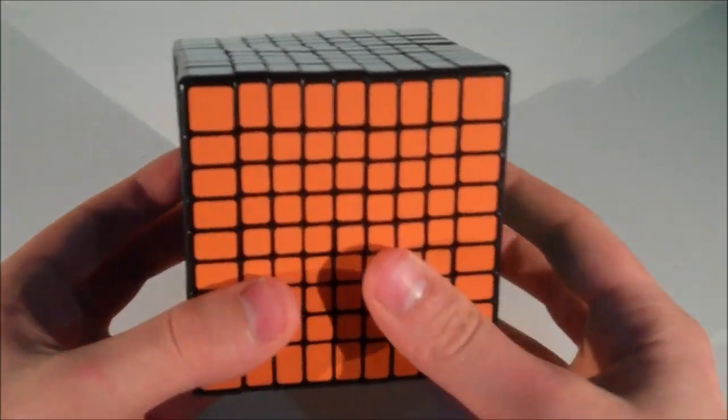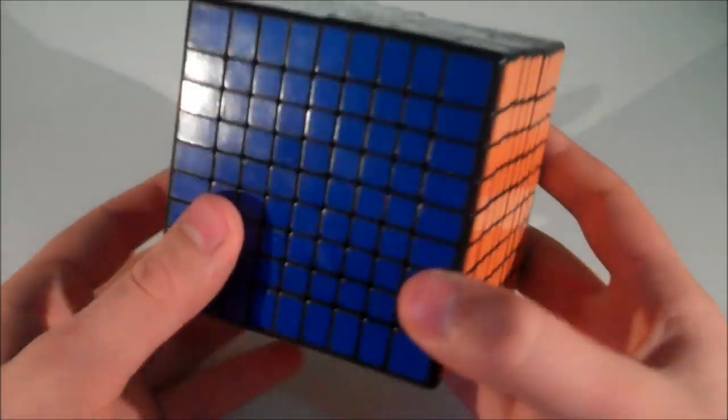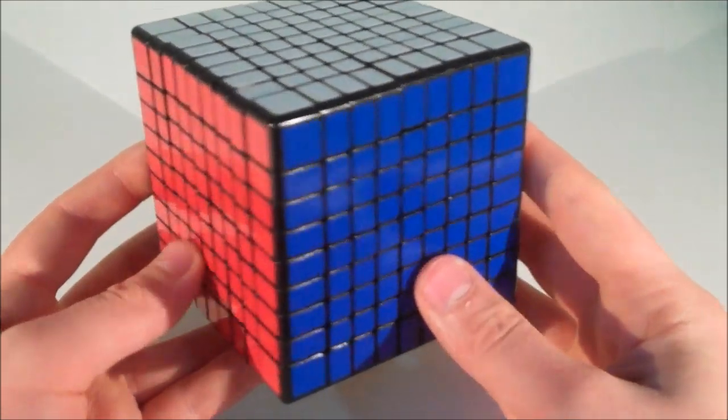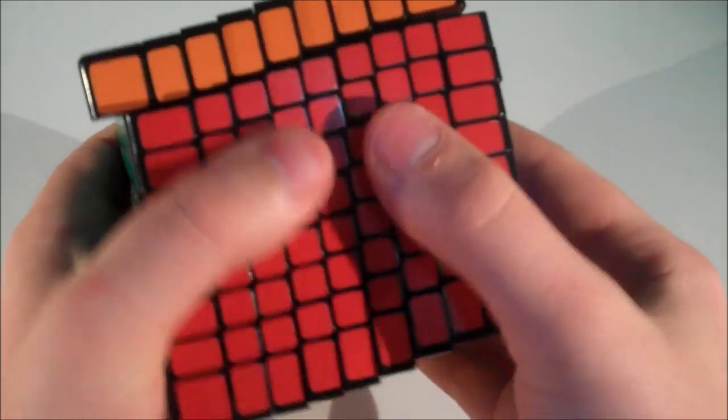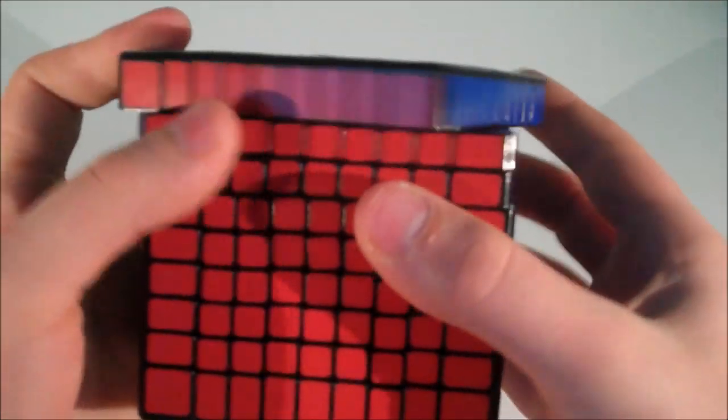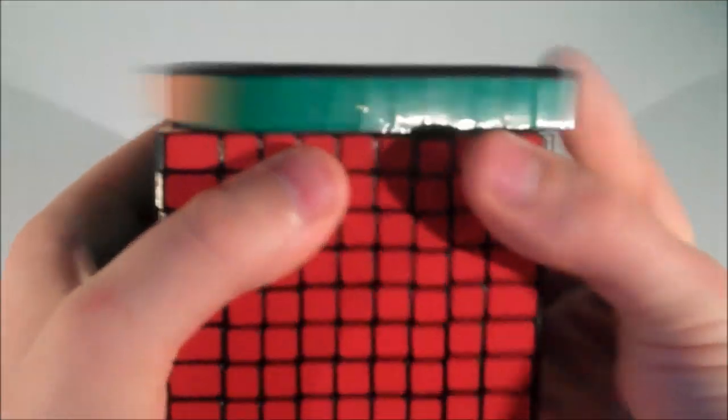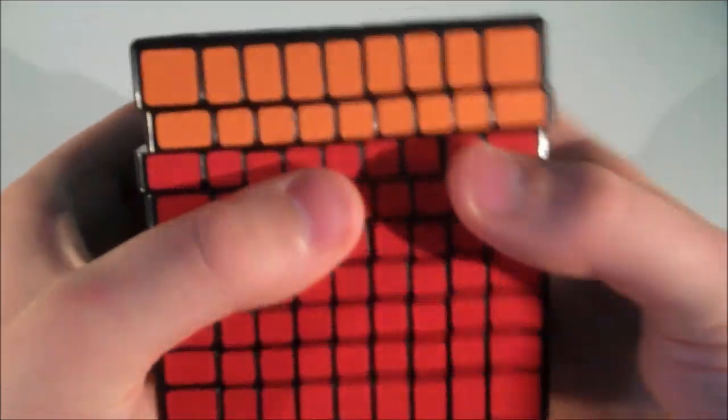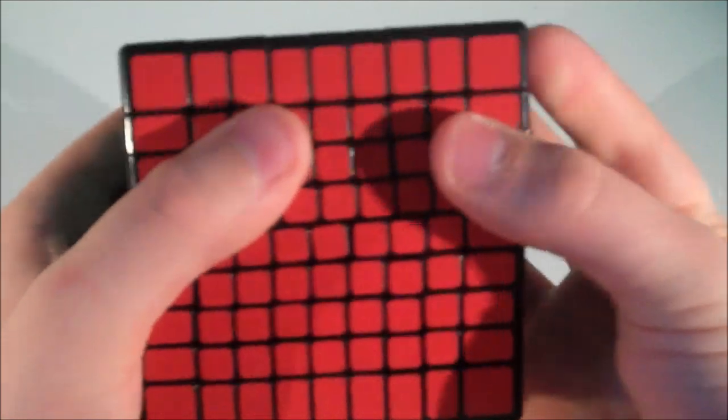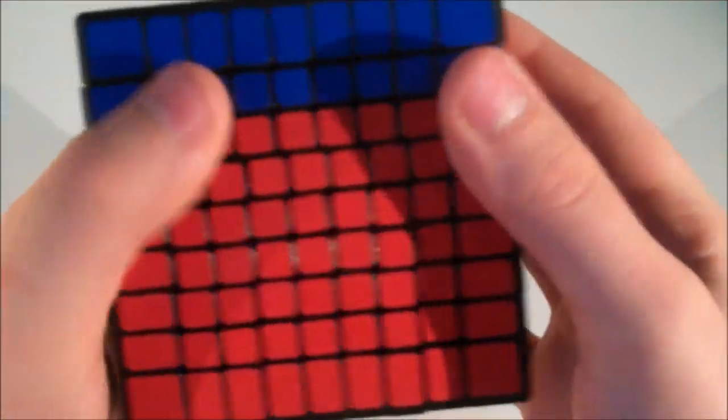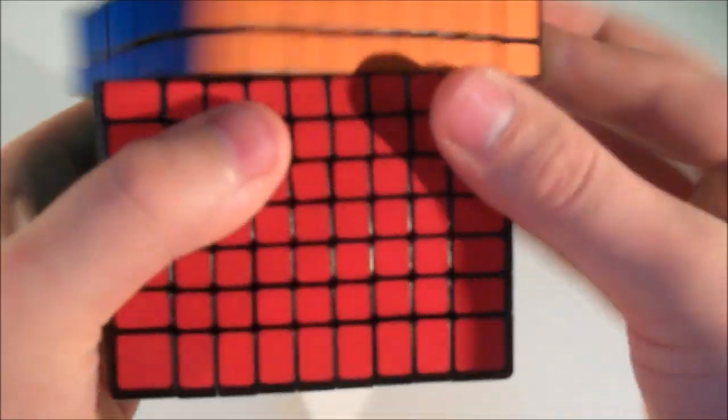So the cube doesn't really lock up much at all. Obviously if you overshoot and try to cut a corner that the cube isn't capable of doing then you might get a lock up, you won't be able to do a turn. But as you saw, the cube doesn't really overshoot for me at all. It just turns so nicely and the turns are very accurate, so I find that I don't really get lock ups at all.